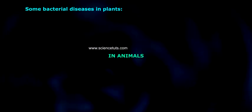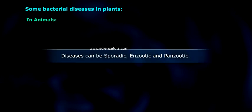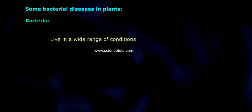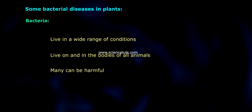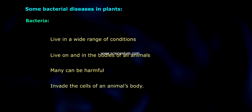In animals, diseases can be sporadic, enzootic, and panzootic. Bacteria live in a wide range of conditions and live on and in the bodies of all animals. Many can be harmful and invade the cells of an animal's body.